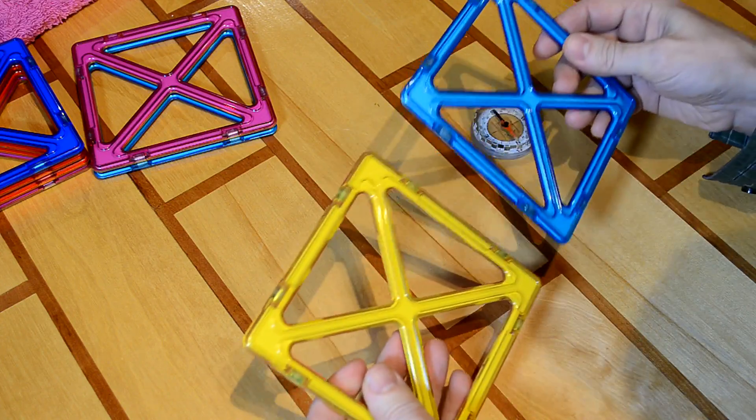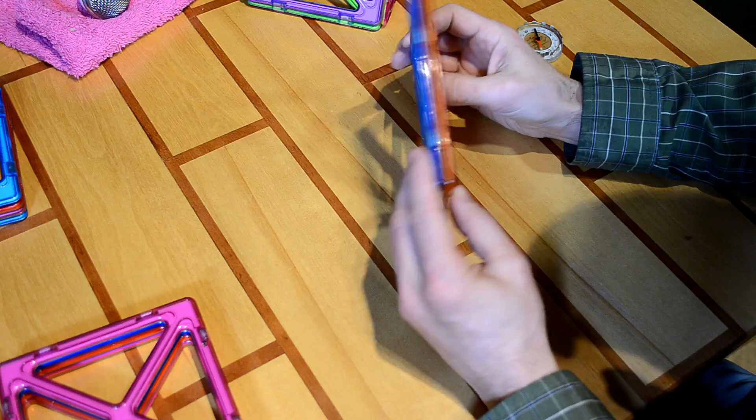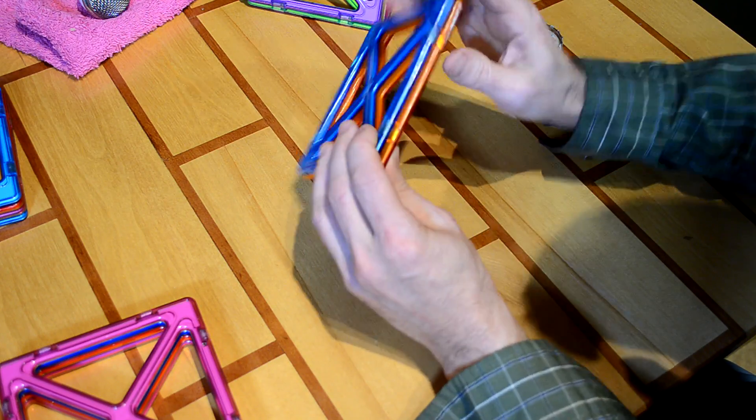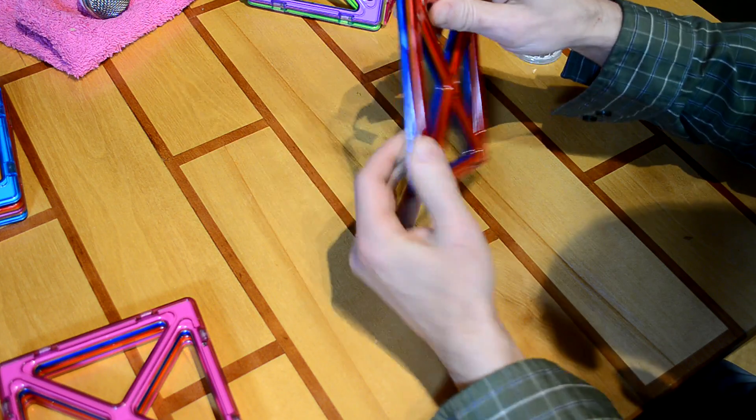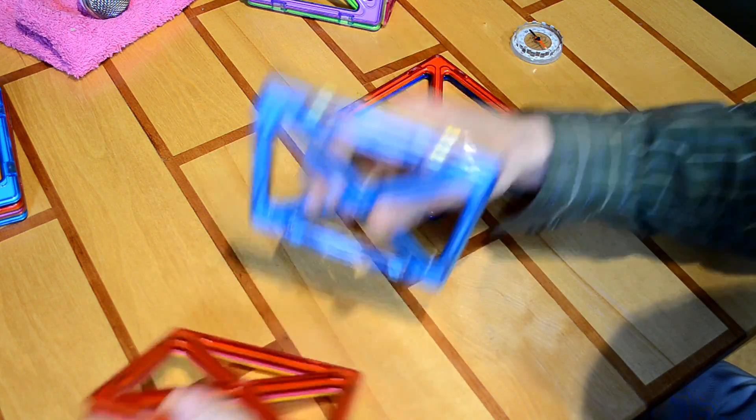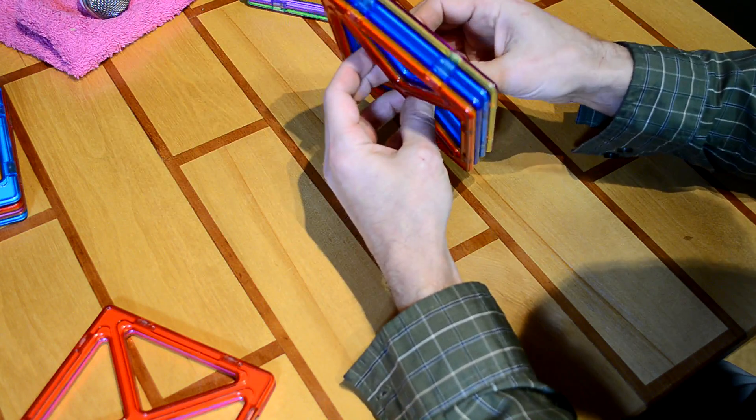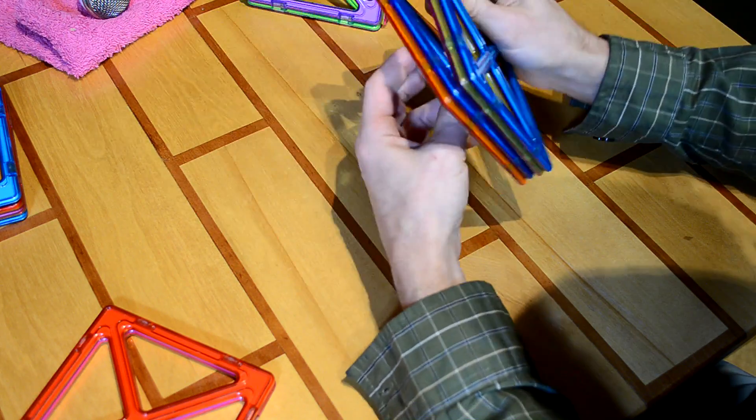So basically, the magnets just dynamically orient themselves all the time. Now, what happens is, as soon as you have two Magformers on top of each other, the magnets line up with each other, and then they no longer rotate with each other. So if you have two stacks, two pieces like this, they don't necessarily line up the magnets, and sometimes they'll actually repel.